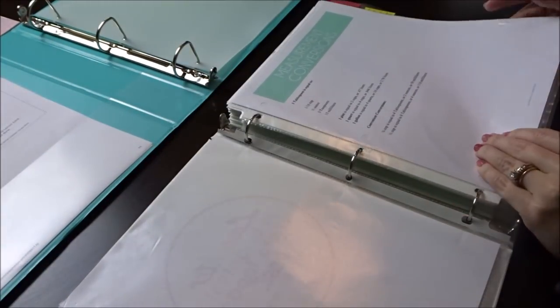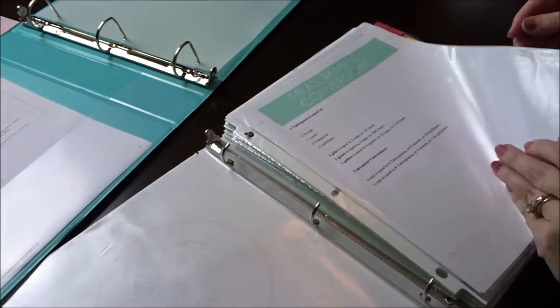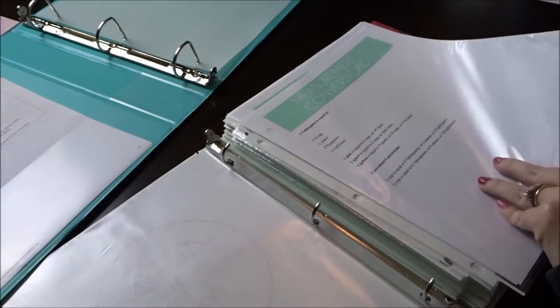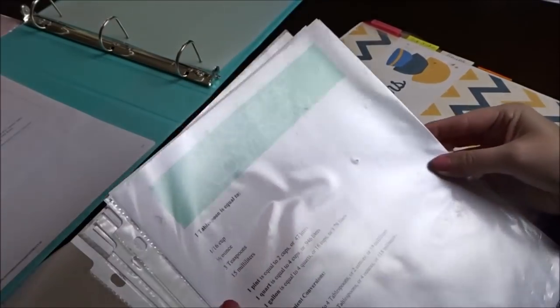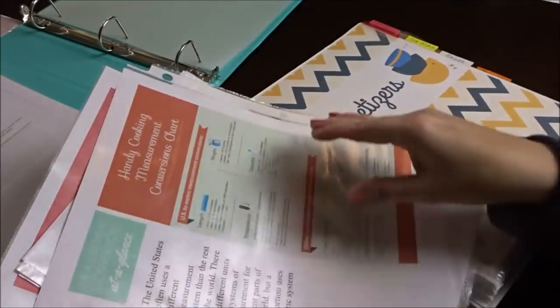Now I'm going to start going through my old recipe binder to decide what I'm going to keep and what I'm going to get rid of. These pages are a definite keep—they're measurement conversions and baking substitutions. They come in very handy.